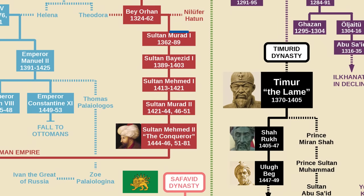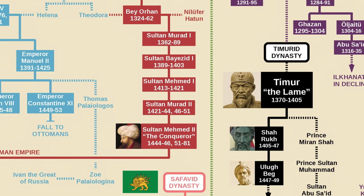Murad I died during the Battle of Kosovo. His son, Bayezid I the Thunderbolt, tried to take Constantinople but couldn't. He was later defeated in the Battle of Ankara by Timur the Lame — or as the narrator calls him, Timur the Jerk. He was captured and the empire broke apart but was slowly put back together. Murad II consolidated the empire and abdicated in favor of his young son, Mehmed II, in 1444. But he was called back two years later to lead the army against a crusading army at the Second Battle of Kosovo.